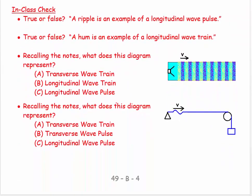Let's do a little question check. True or false: a ripple is an example of a longitudinal wave pulse. Assuming there's basically one ripple, it is a pulse — but longitudinal? No. On a ripple the water goes up and down but the energy goes sideways, so that would be transverse. That's a false statement.